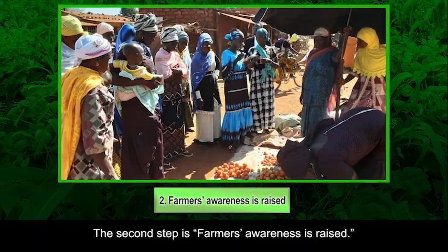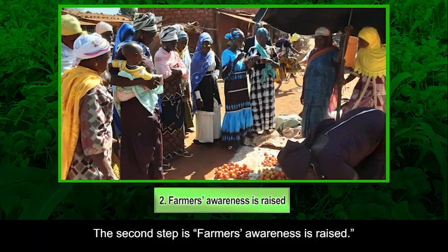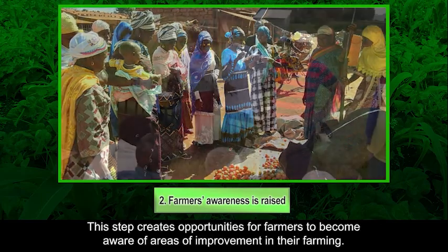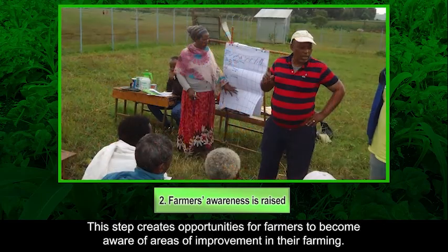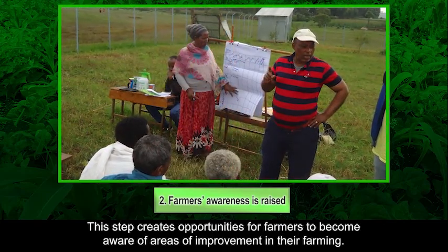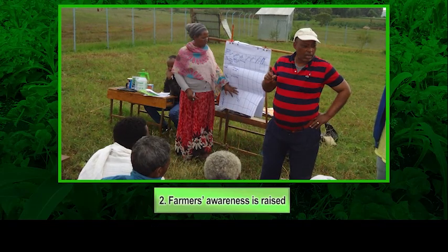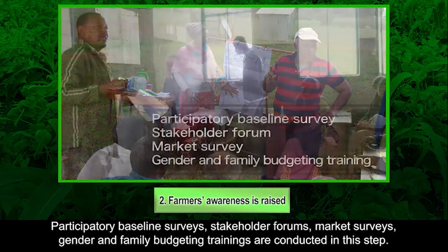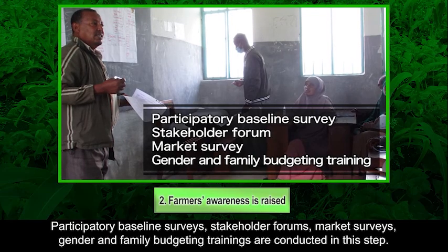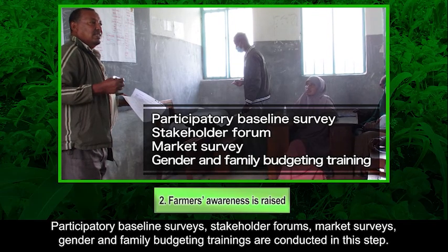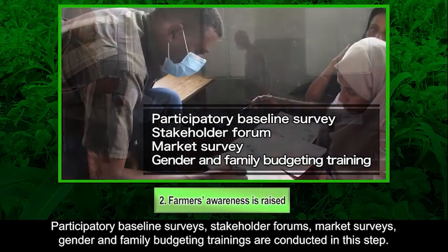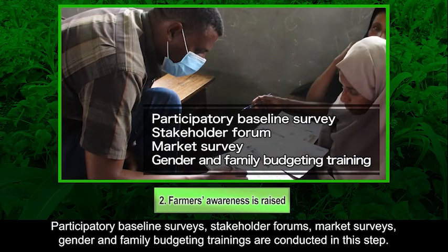The second step is farmers' awareness is raised. This step creates opportunities for farmers to become aware of areas of improvement in their farming. Participatory baseline surveys, stakeholder forums, market surveys, and gender and family budgeting training are conducted in this step.